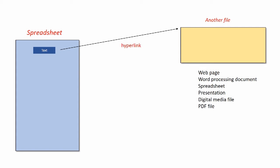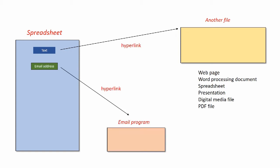There's one other kind of thing you'll be able to use with this technology, and that would be an email address. An email address is kind of the same thing, but you don't really link to another file — you're linking to a program, specifically the email program on your computer. I happen to be using Outlook, so when I show you the demonstration in a moment, that's the one I'll be using.